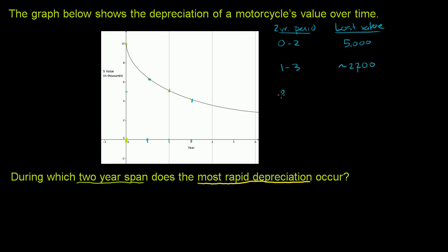Then if we look at the second through the fourth year, we went from about $5,000 to about $4,000. So we lost about $1,000 in value. Maybe a little less.